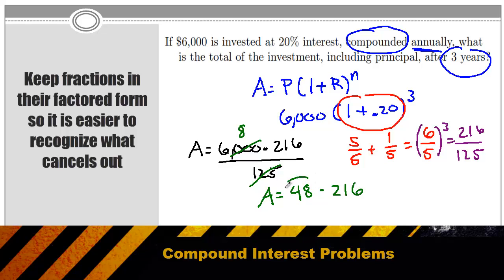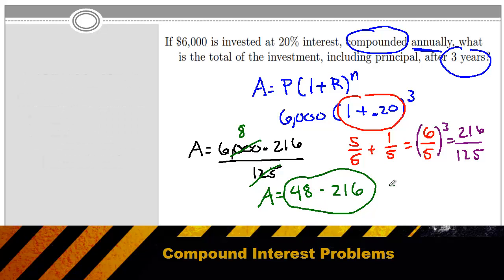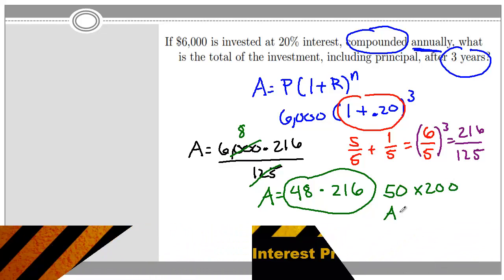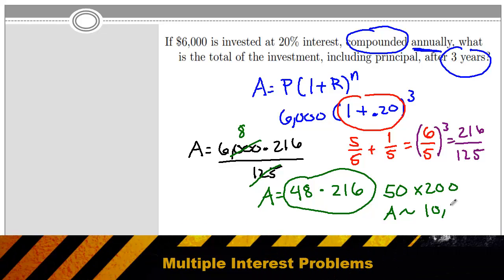Once we're to this point, with a multiple choice test, it's probably going to be good enough to estimate. So I'm going to rewrite this as 50 times 200. Or I can estimate my final amount is somewhere around 10,000.